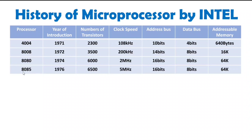Intel had huge success with the 8085 processor, which was introduced in 1976 with 6,500 transistors. It had different versions, so the clock speed varied — the range was 3 to 6 megahertz, and the general model had a 5 megahertz clock speed. The address bus and data bus were 16 and 8 bits respectively. With a 16-bit address bus, it could address 64KB of memory.